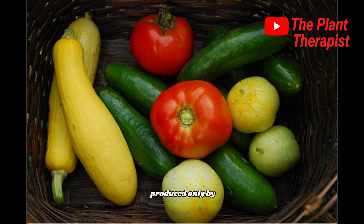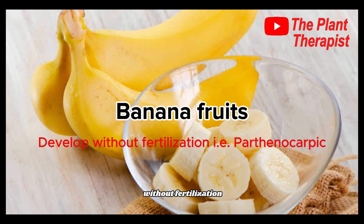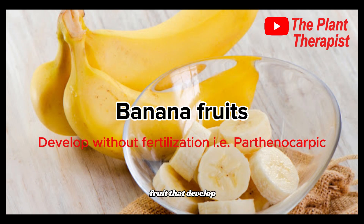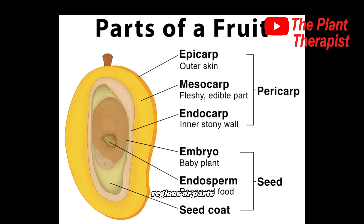All fruits develop from ovaries, so they are produced only by flowering plants. In some exceptional cases, such as banana, the fruit develops without fertilization. This type of fruit is said to be parthenocarpic — that is, a fruit that develops without fertilization — and they usually do not contain seeds.